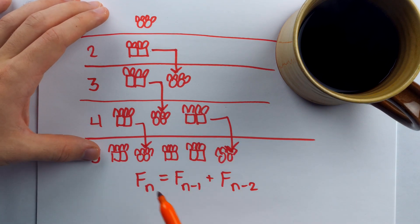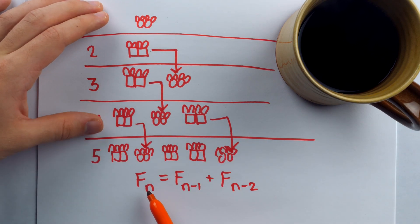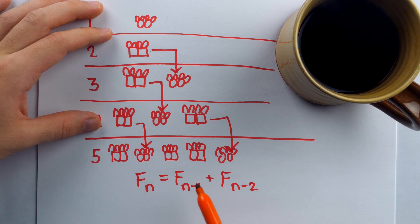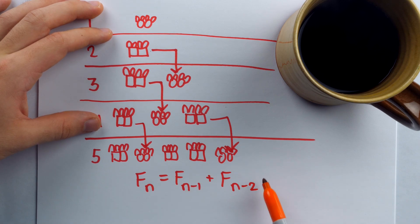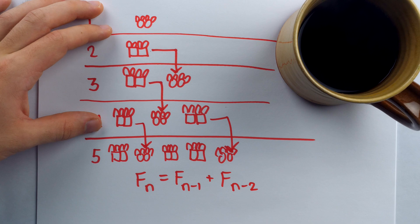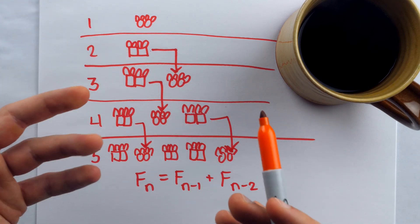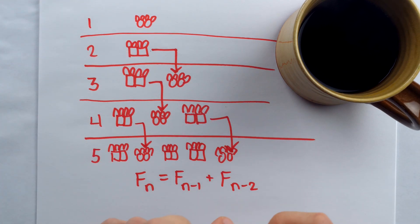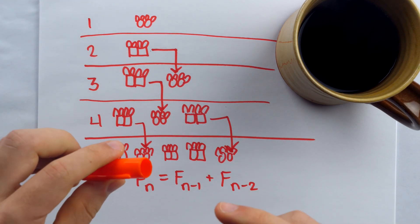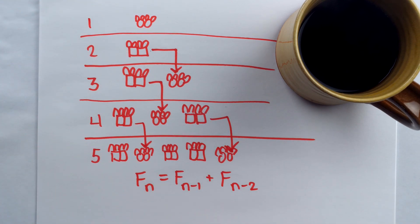Expressed with math notation, we write: F(n), the nth term of the Fibonacci sequence, equals F(n−1), the preceding term, plus F(n−2), the term two terms prior. This acts as a recursive formula for the rabbit problem: how many pairs of rabbits in month n is the number we had the previous month plus the number in the month prior to that. That's how the Fibonacci sequence showed up in Fibonacci's book, Liber Abaci.